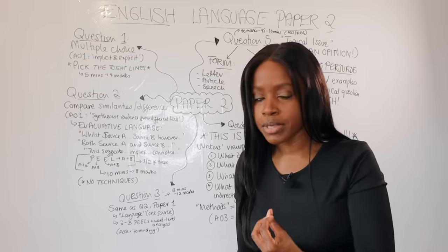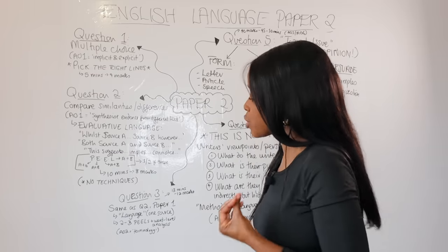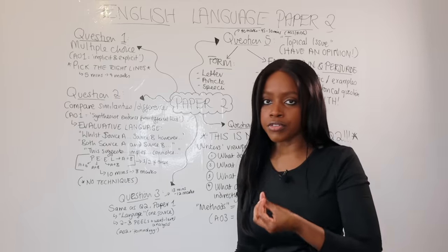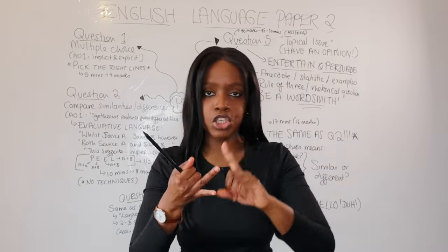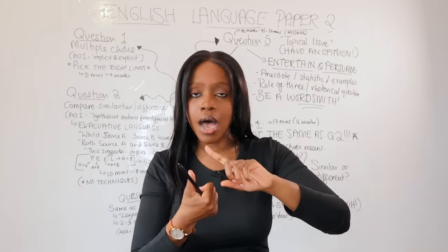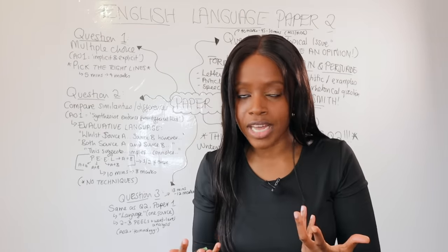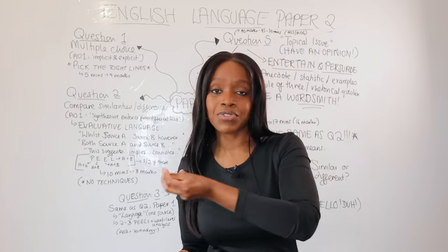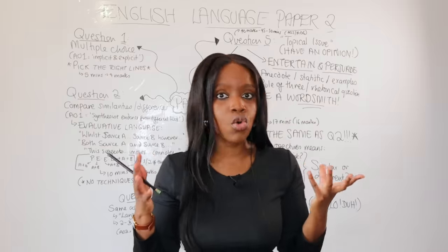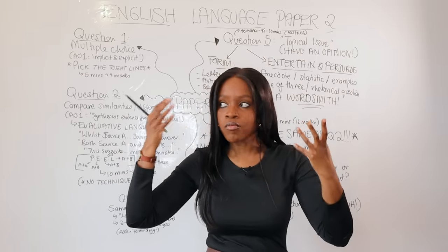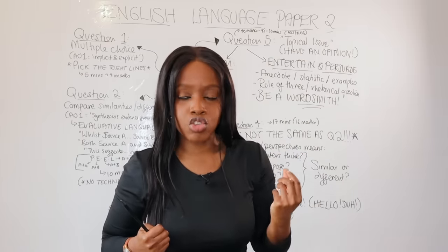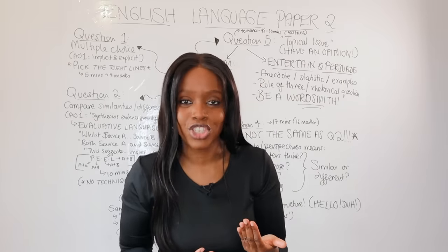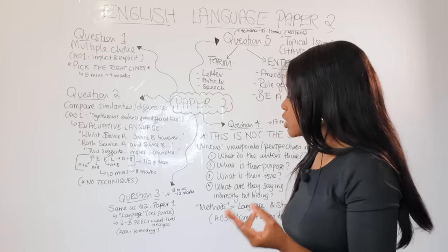As it's the same skills as question two of paper one, you need to demonstrate an awareness of subject terminology, because this tests your AO2 skills. Are you familiar with different subject terminology relating to language — alliteration, simile, sibilance, metaphors, personification, hyperbole, all of that? Refer to my language and structure techniques for paper two video if you're still unclear on what language and structure mean, so that going into your exams you are familiar with the different terminologies.